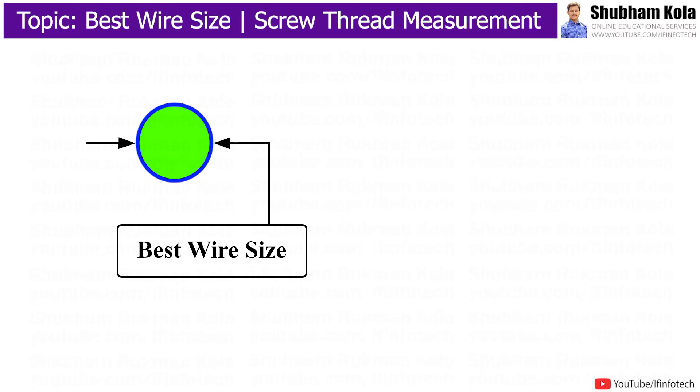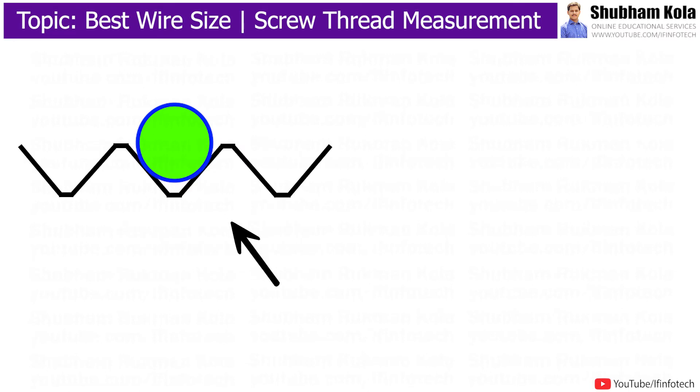In order to calculate best wire size, that is diameter of wire, here I will magnify this part having wire diameter small d, which we are going to calculate. Here wire is placed in V-groove,